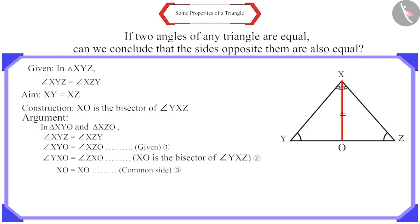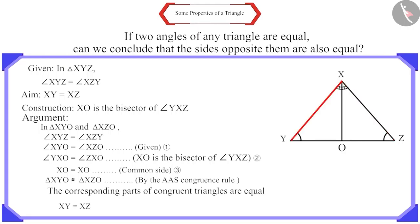Side XO is the common side. From equations 1, 2 and 3, we can say that by the AAS congruence rule, these two triangles are congruent. And we know that the corresponding parts of congruent triangles are equal. Therefore, side XY and side XZ are equal.